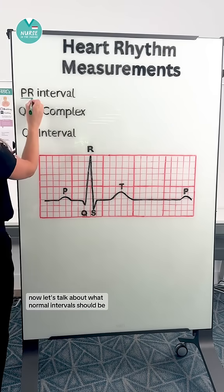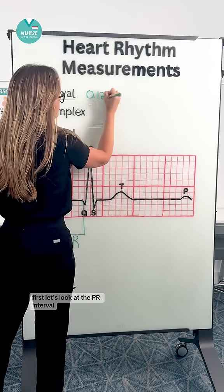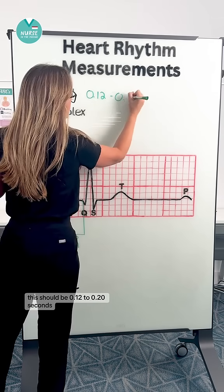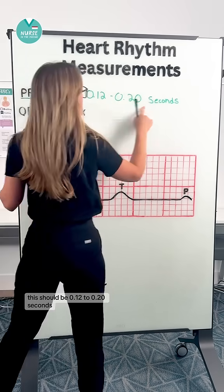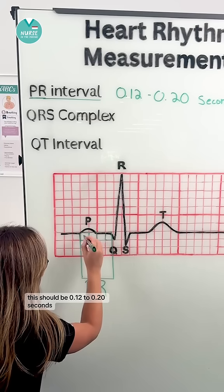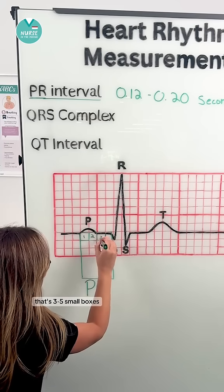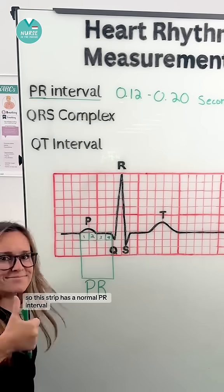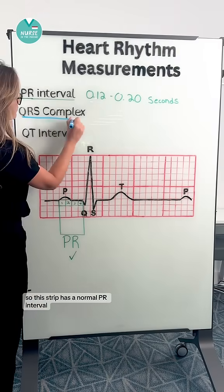Now let's talk about what normal intervals should be. First, let's look at the PR interval. This should be 0.12 to 0.20 seconds — that's three to five small boxes. So this strip has a normal PR interval.